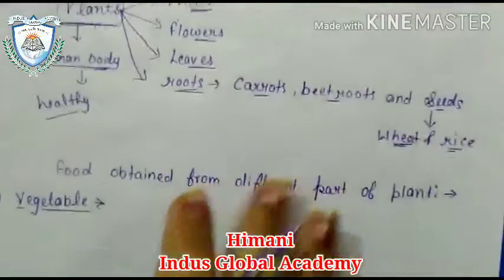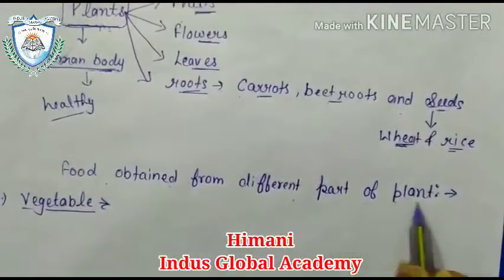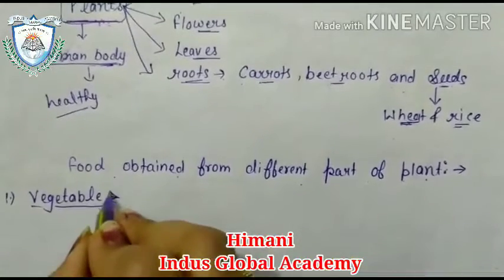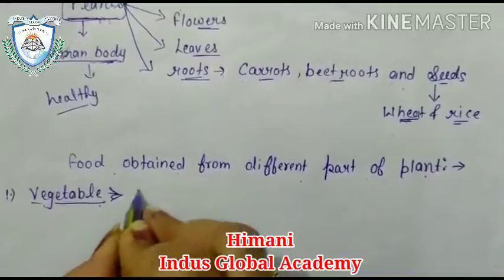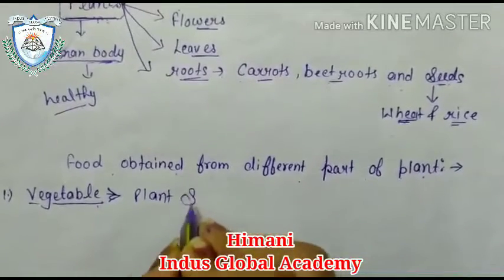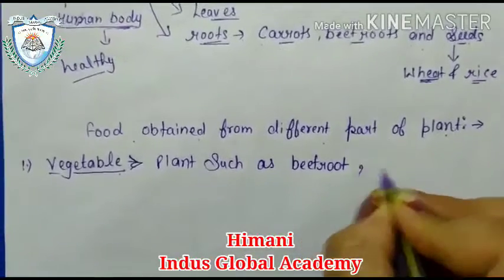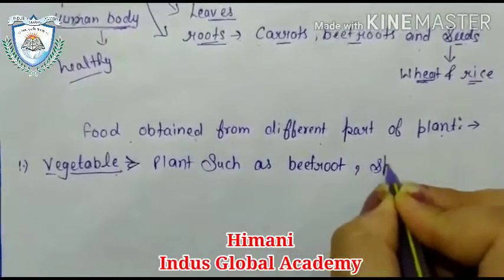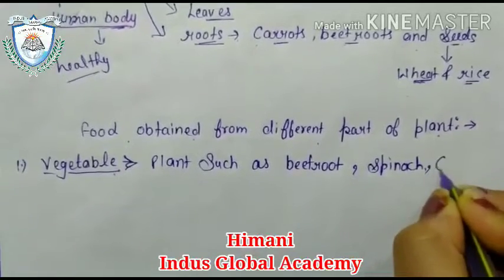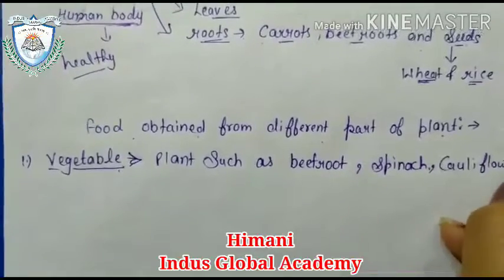Food is obtained from different parts of plants. First is the vegetable. Vegetables are basically obtained from plants — such as beetroot, spinach, cauliflower, and others.